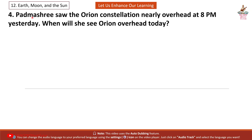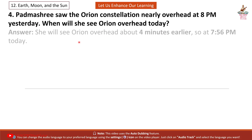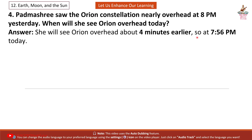Question 4. Padma Shri saw the Orion constellation nearly overhead at 8 PM yesterday. When will she see Orion overhead today? Answer: She will see Orion overhead about 4 minutes earlier, so at 7:56 PM today.